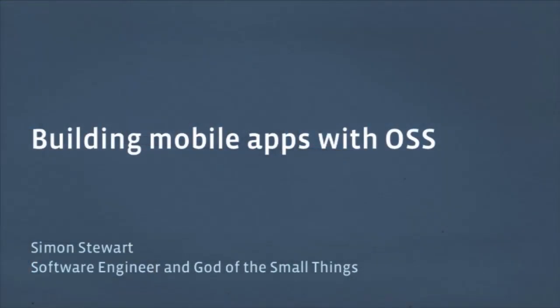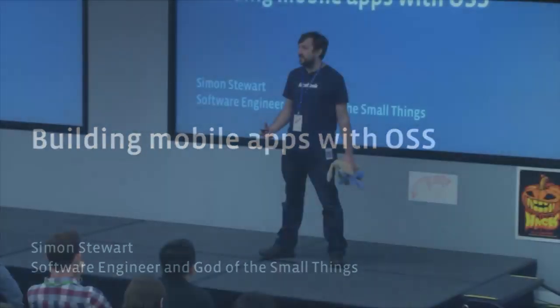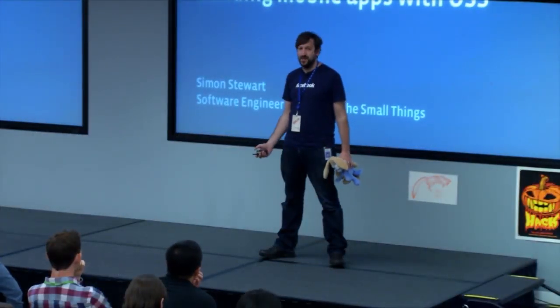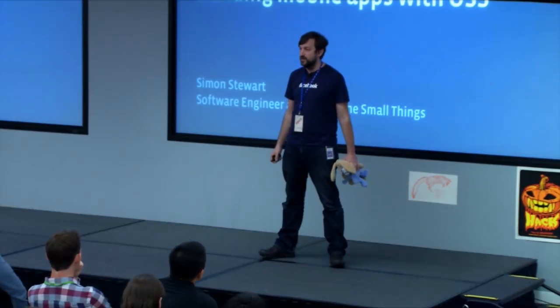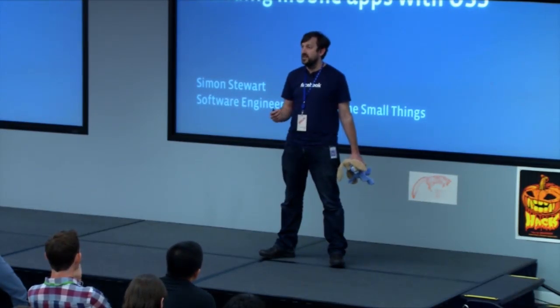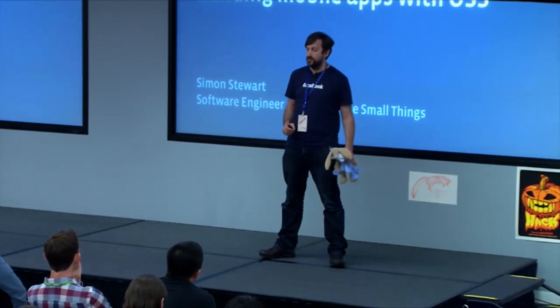Hi, everyone. I'm Simon Stewart. I'm an engineer from the London office. My team is the internal tools team, and I focus on developer productivity and effectiveness. That basically means that I write tools and infrastructure to allow people to write tests and build their code fast. The main thing I do is I work on our end-to-end Android testing, and I also help out with some of our build tools.